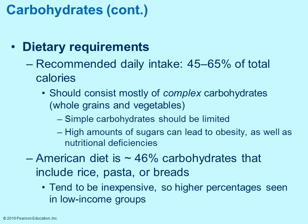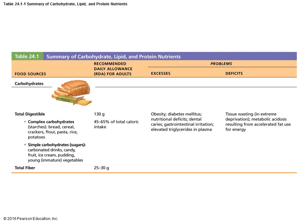A lot of the American diet includes rice, pasta, or breads — one reason being they tend to be inexpensive. Depending on which economic group you fall into, there's only sometimes so much money available. So we can state these recommendations, but that might not fit with your budget from a realistic standpoint. This table shows a summary for carbohydrates — the recommended daily allowance and what happens when you have too much or too little.